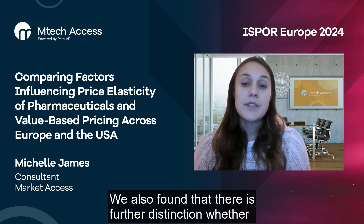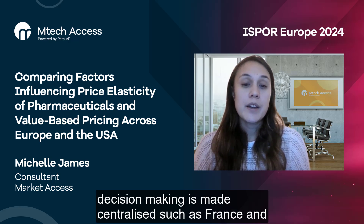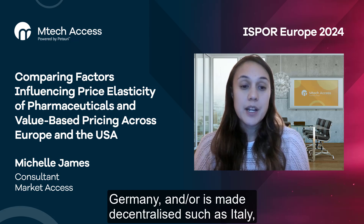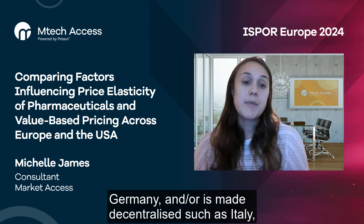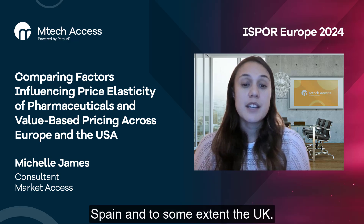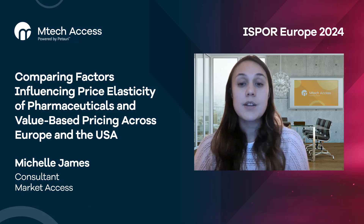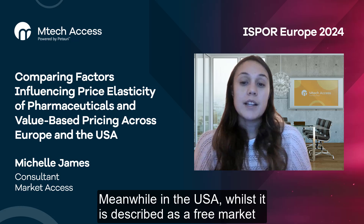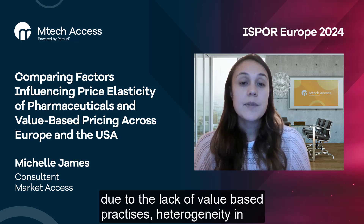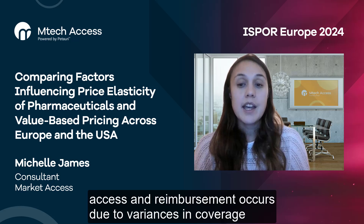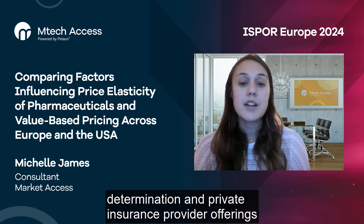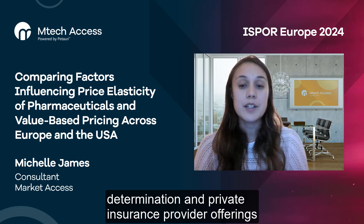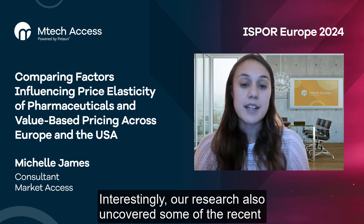We also found that there is further distinction whether decision-making is centralised, such as France and Germany, or decentralised, such as Italy, Spain, and to some extent the UK. Meanwhile, in the USA, whilst it is described as a free market due to the lack of value-based practices, heterogeneity in access and reimbursement occurs due to variances in coverage determination and private insurance provider offerings between states.